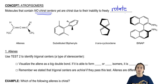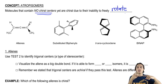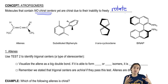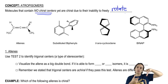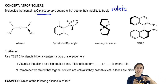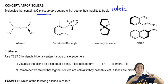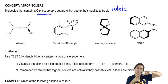Substituted biphenyls — a biphenyl is just two phenyl groups attached in one spot, and they're substituted meaning that they can't really rotate because those substituents that you can see sticking out kind of act as teeth. They lock it together so it can't fully rotate.